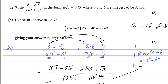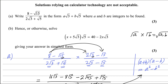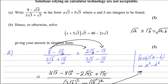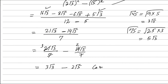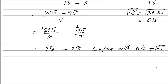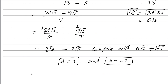This is exactly according to our requirement. We can find the values of A and B by comparing with A square root 3 plus B square root 5. Equating the values, A equals 3 and B equals negative 2. So the first part is done.